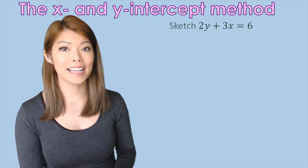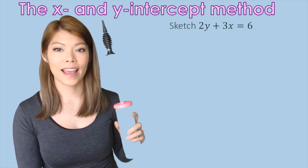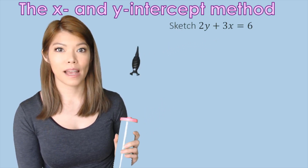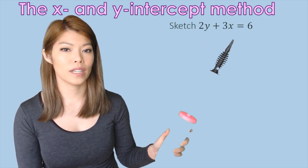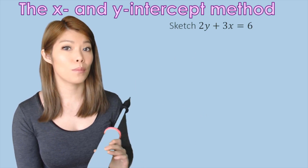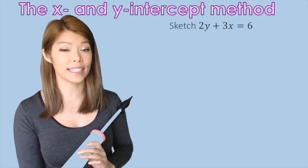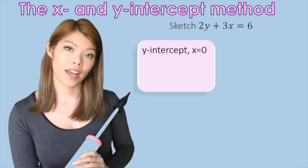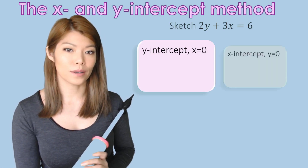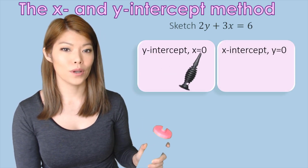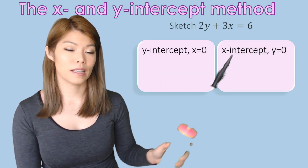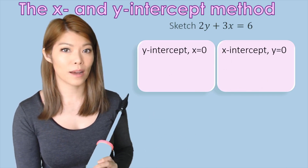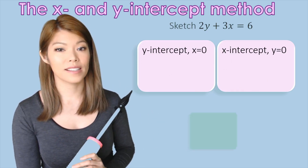The second method we're going to look at is the x and y-intercept method. For example, sketch 2y plus 3x equals 6. Here we have both x and y-intercepts. To find each, we let the other value be equal to 0 — for the y-intercept, x is 0; for the x-intercept, y is 0. Once we find these two coordinates, we can sketch the graph.